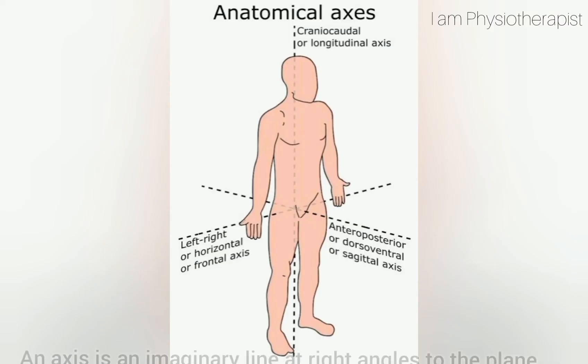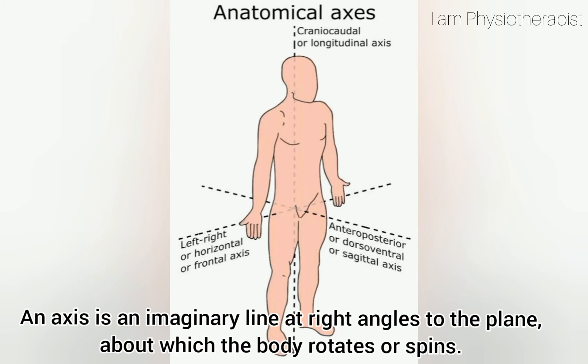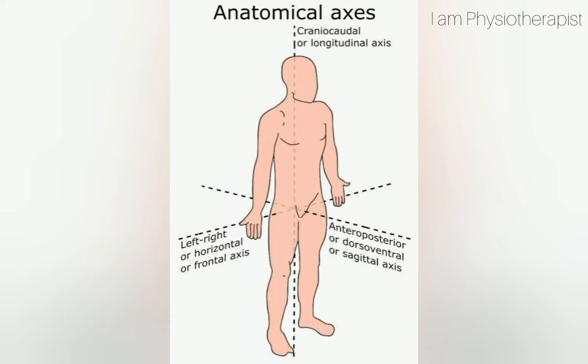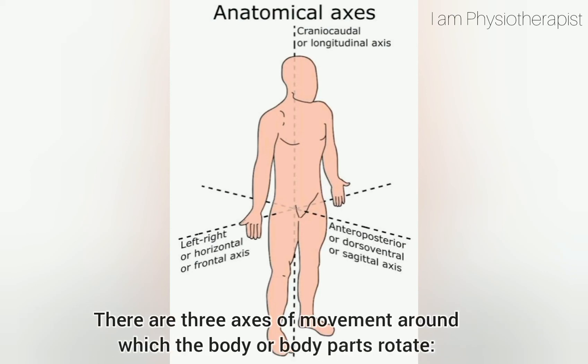An axis is an imaginary line at right angles to the plane about which the body rotates or spins. There are three axes of movement around which the body or body parts rotate.